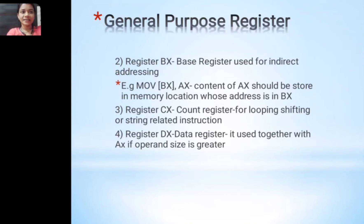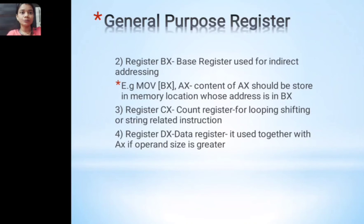For example, the instruction MOV [BX], AX means the content of the accumulator register should be moved to or stored in the memory location whose address is in the BX register. The square bracket notation indicates a memory location, so BX holds the address of the destination memory location.